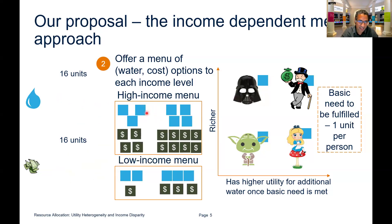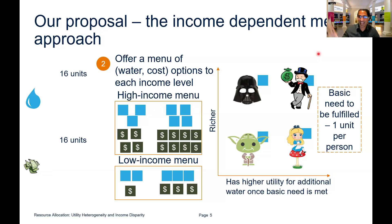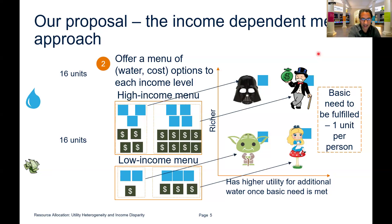The high-income menu gives a choice between a certain amount of water with a certain payment, or a little more water by paying a little more. Darth Vader and Mr. Monopoly could choose either option. If these options are carefully designed to maximize aggregate welfare, you can target a particular menu item to a particular individual, and they will pick that item exactly.